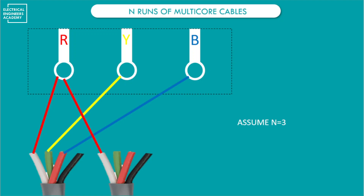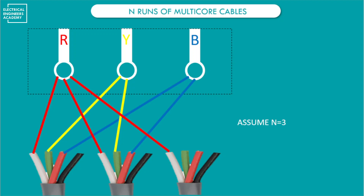For the second cable run: the first core connects to R, the second core connects to Y, and the third core connects to the B terminal. So now each terminal has two connections — one from each cable. R took two cables, Y took two cables, B took two cables, so n equals two. The number of runs is the number of current-carrying conductors connected to each terminal.